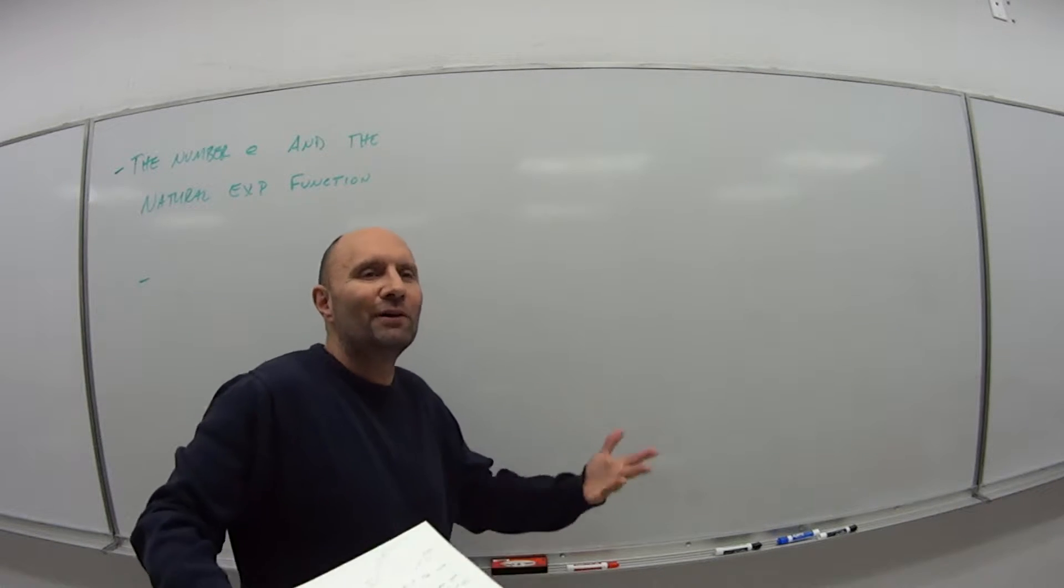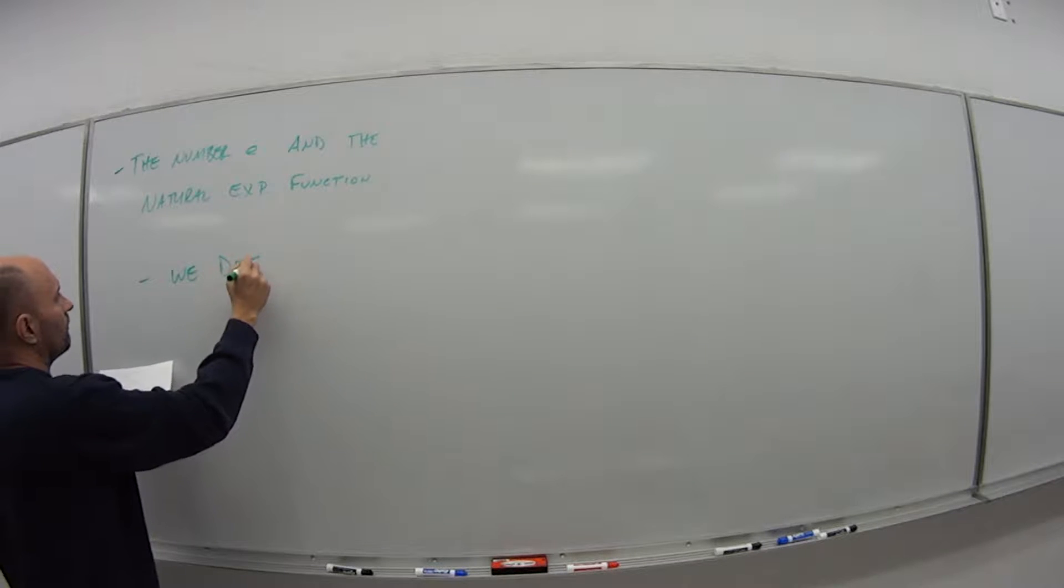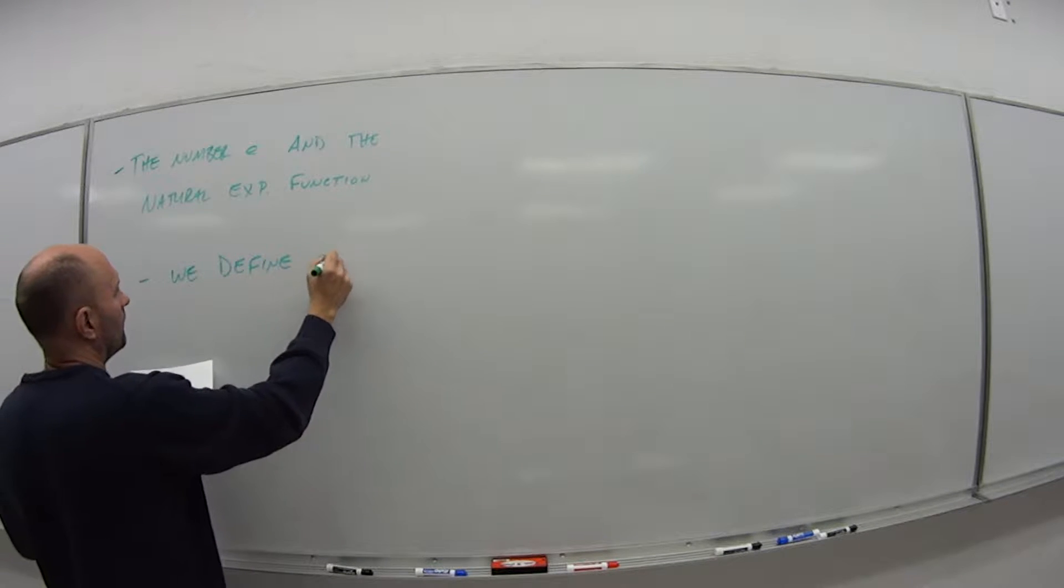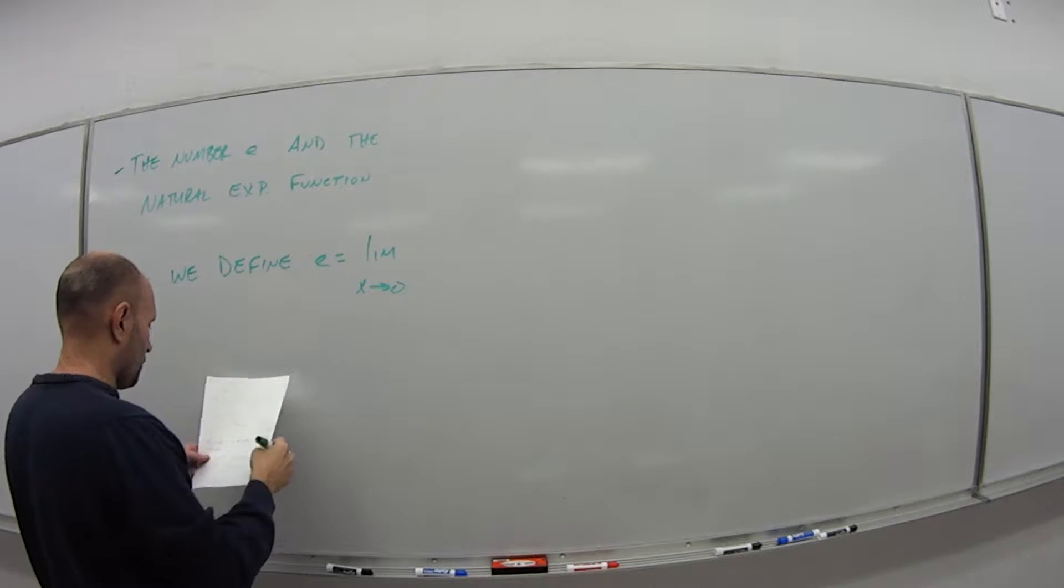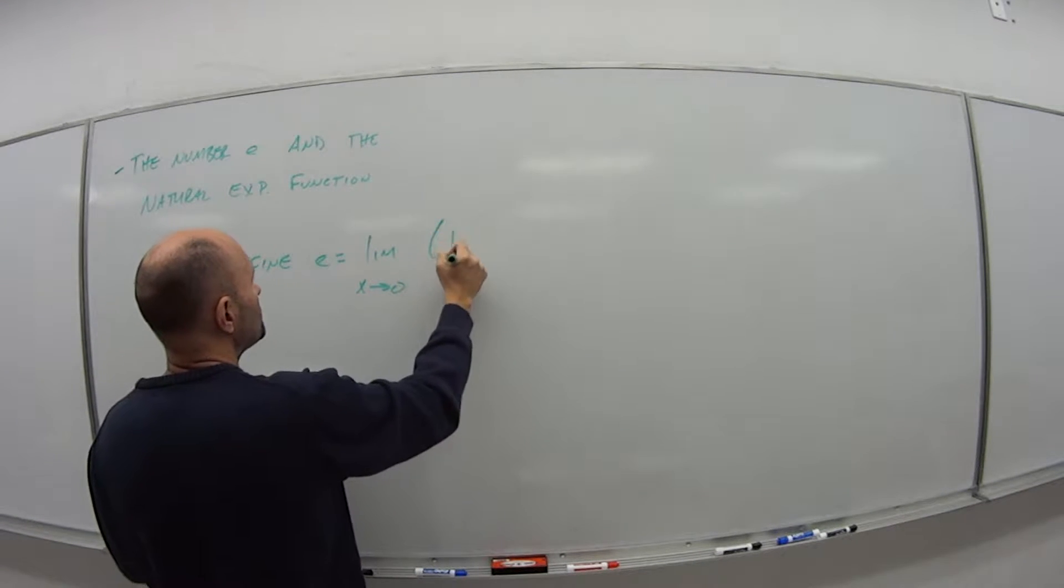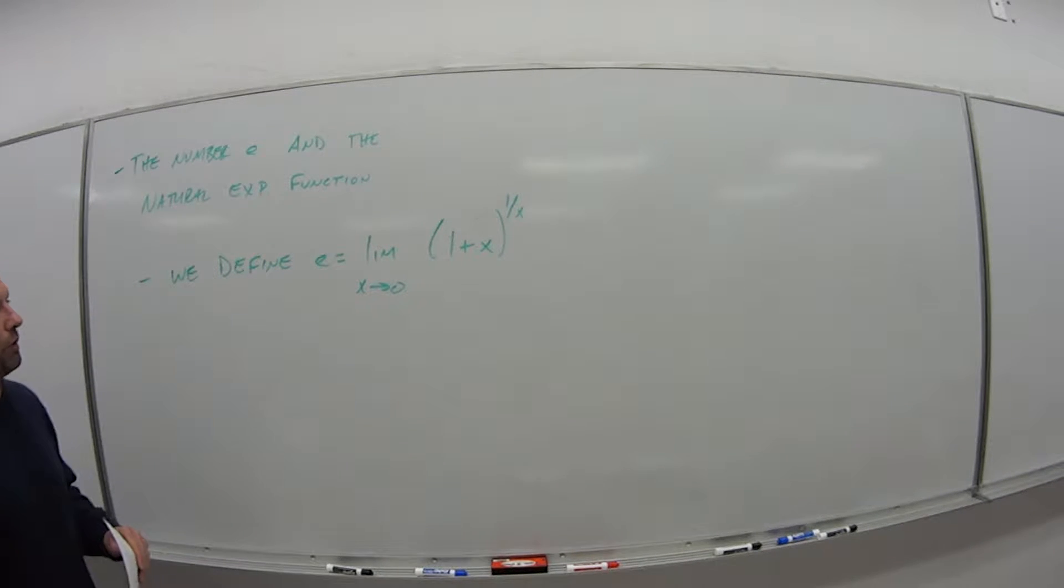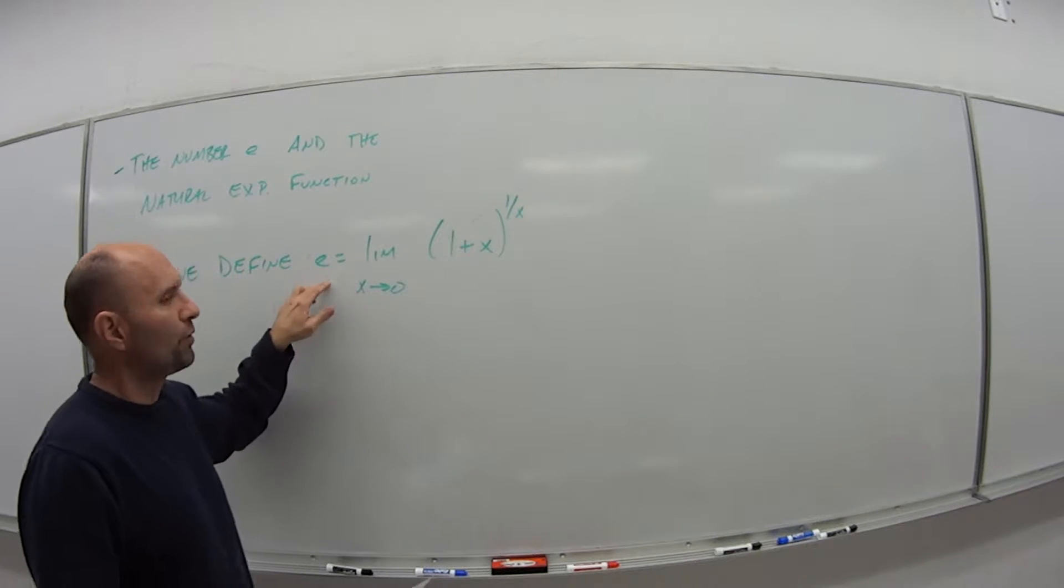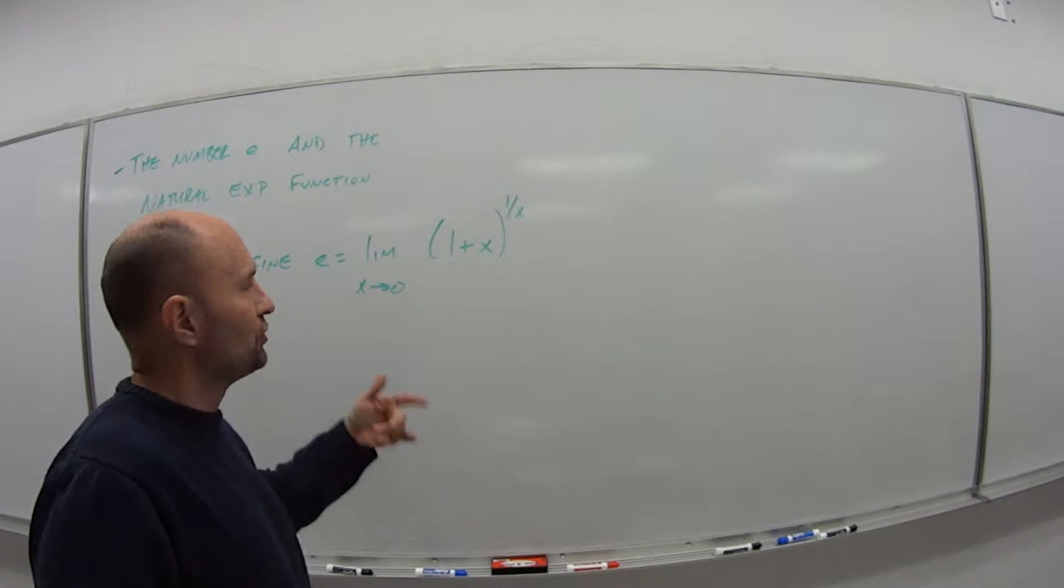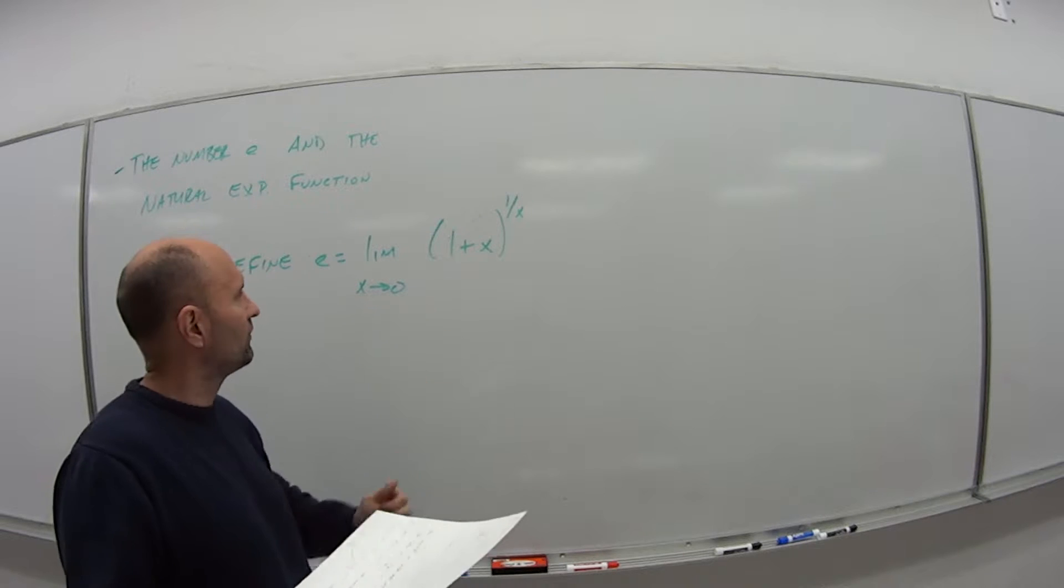In terms of calculus, the number e we define as following. We say that e is the limit as x goes to 0 of the function 1 plus x all to the 1 over x power. As x goes to 0, this function approaches our irrational number e, which is like 2.719 something in that area.